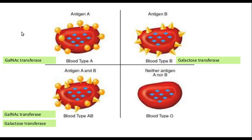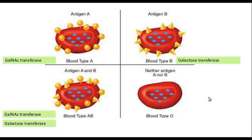To summarize: the parent H antigen, if acted upon by N-acetyl-galactose transferase, gives the A antigen. If acted upon by galactose transferase, it gives the B antigen. If the person has both enzymes, they are the AB blood group. If neither enzyme is present, the H antigen remains unchanged and these people form the O blood group.